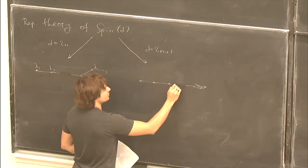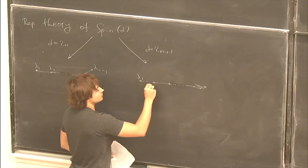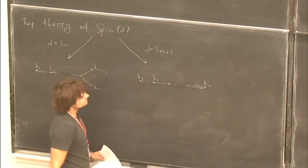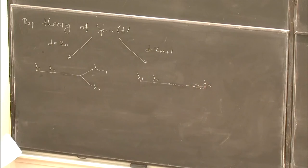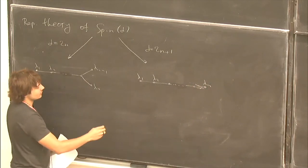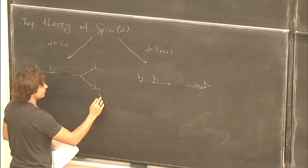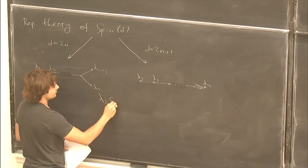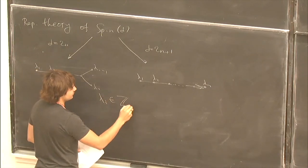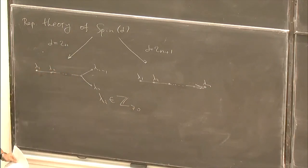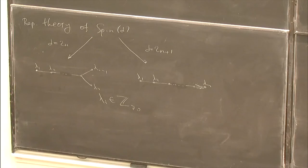In both cases, these integers, which are called the Dynkin labels, are non-negative integers. The set of all possible combinations of Dynkin labels gives you the set of all possible irreducible representations of the group Spin(D).